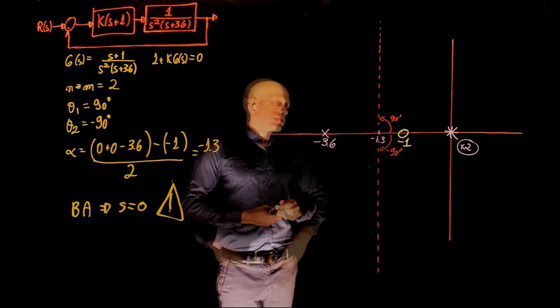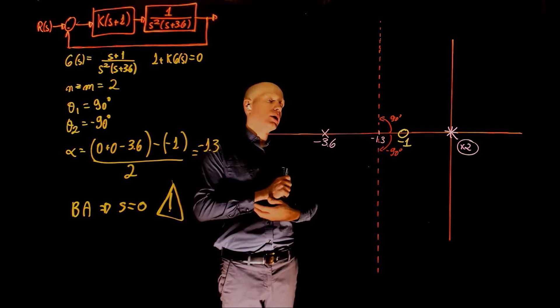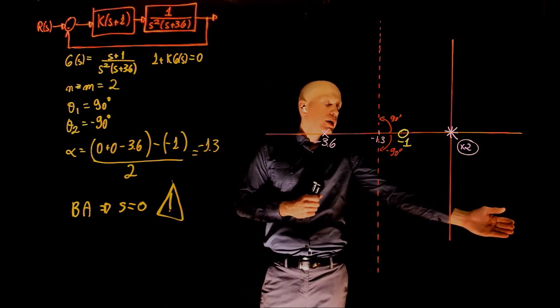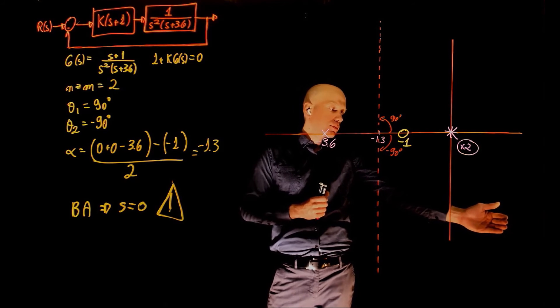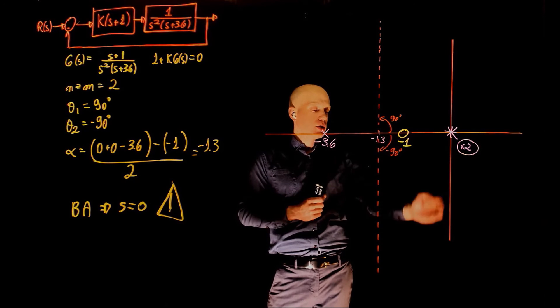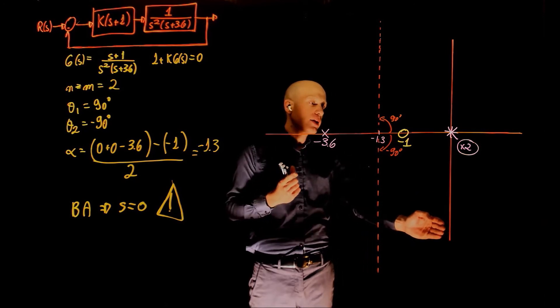Now where is the root locus? Always to the right of an odd number of poles and zeros. So here, if we start the count from positive infinity, we have 0. When you cross these two poles at 0, we have a count of 2, but that's an even number, so there is nothing here.